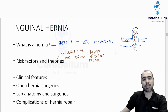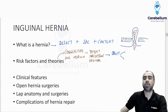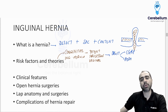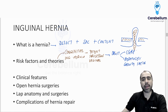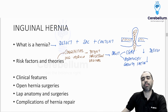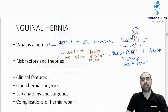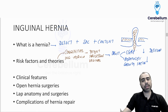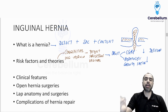The theory is that the processus vaginalis gets obliterated due to two hormones: calcitonin gene-related peptide (CGRP) and hepatocyte growth factor. If these hormones are not produced adequately — if they are deficient — then the processus vaginalis will remain patent. They are required to obliterate and fibrose it, and if they are deficient for whatever reason, it will remain patent and you can get a congenital inguinal hernia.